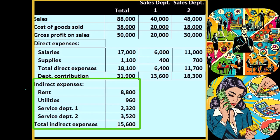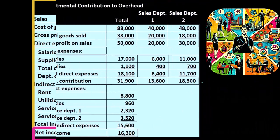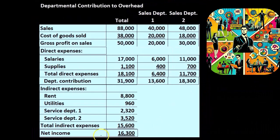Then we have the net income. We calculated the net income just on the totals here, and not on the allocated amounts, so we're just showing the net income on the totals. We're emphasizing here the department contribution in this format.